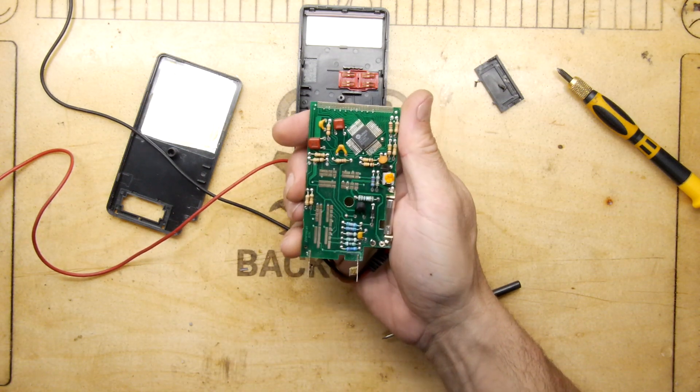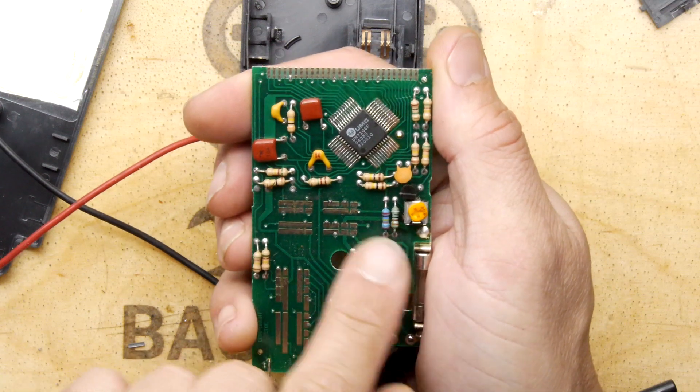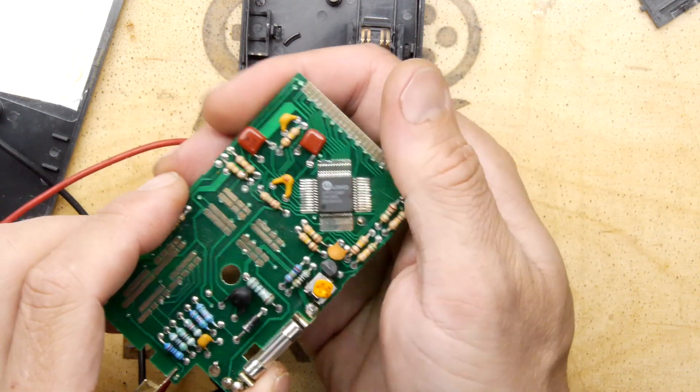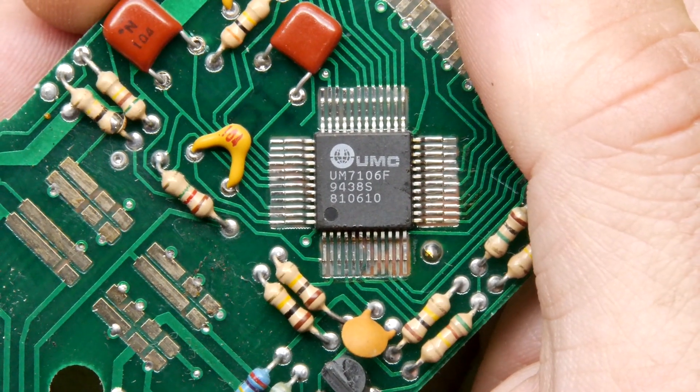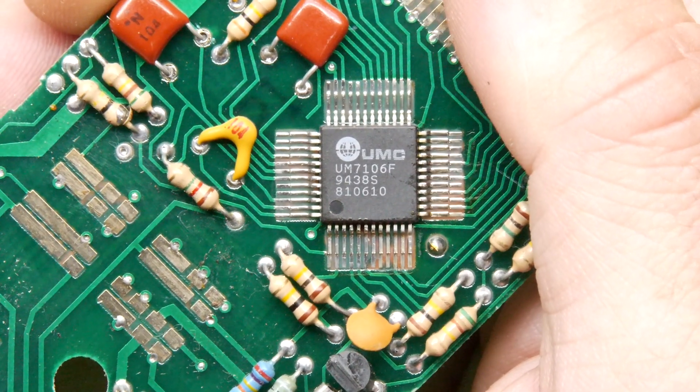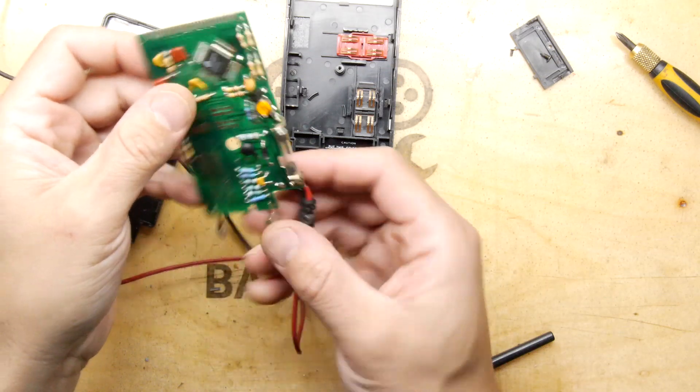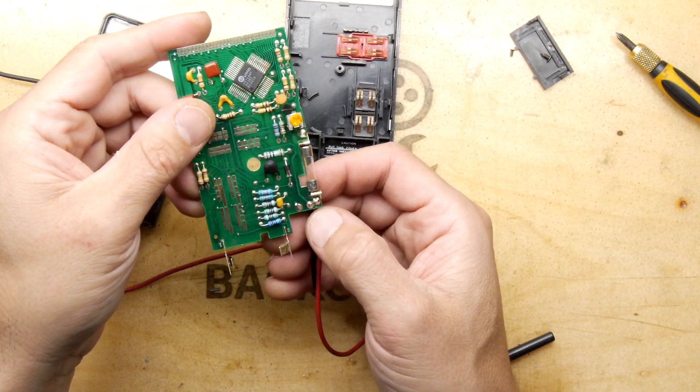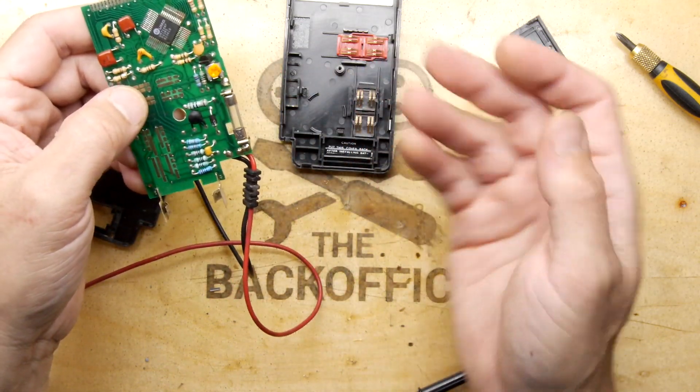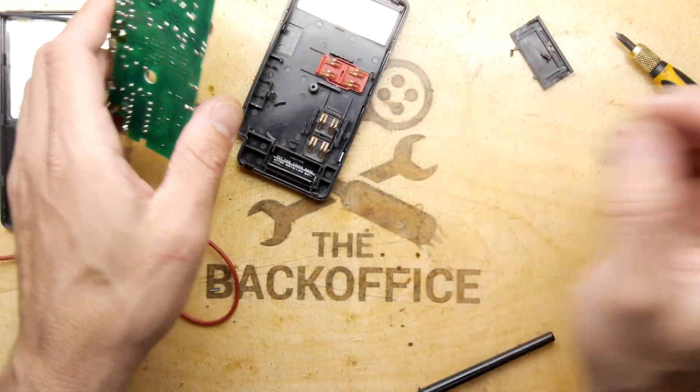That's quite neat. There's quite a lot more regular through-hole components on this than I was expecting to be honest. So there's all your resistors, diode, more resistors, a couple of capacitors, adjustment thing, and this IC here which is marked as a UMC UM7106F 9438S 810610. Probably standard multimeter chip. I might Google that though just to see if there's anything about the voltage. Now again no indication here on what the voltage might be. So maybe we'll just start applying some voltage. So I might solder a couple of wires onto this and we'll hook them up to the bench power supply and just start gingerly turning it up.